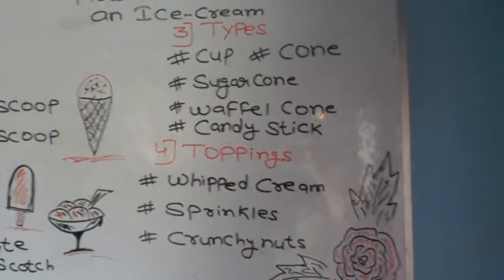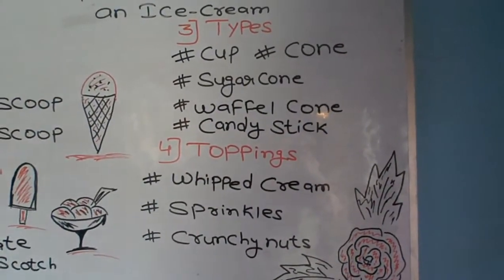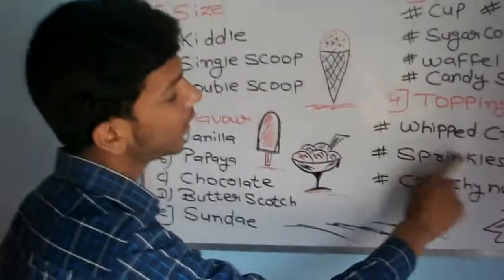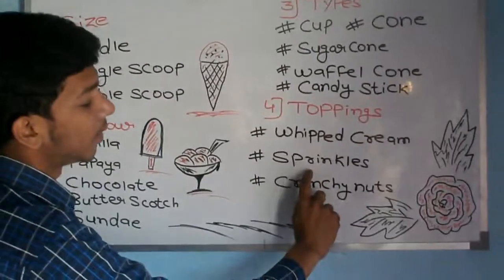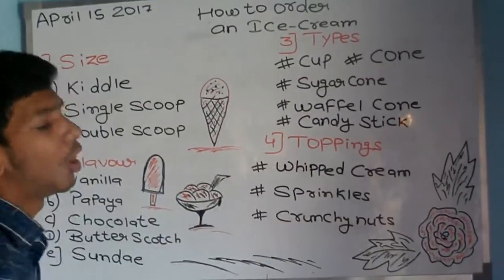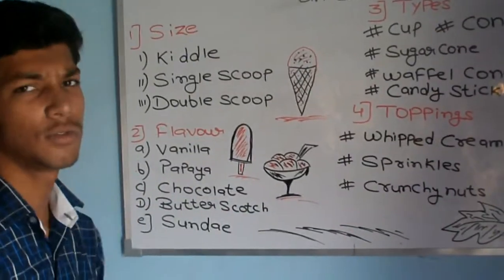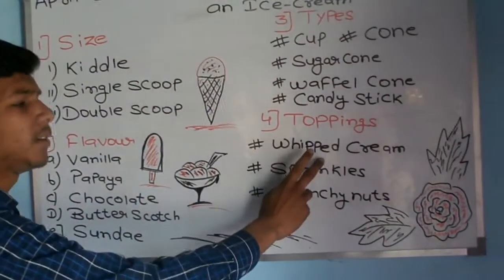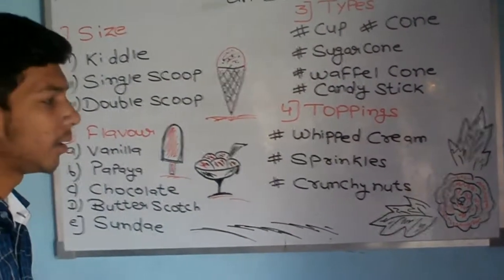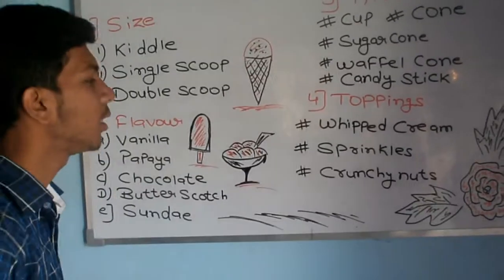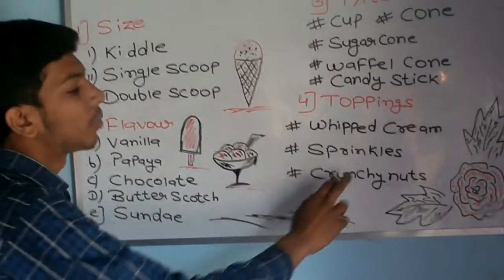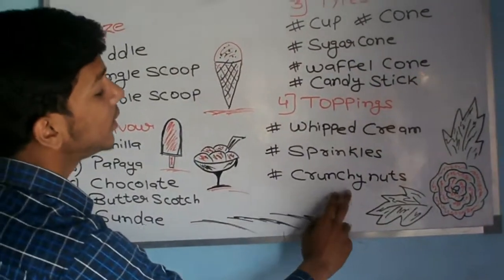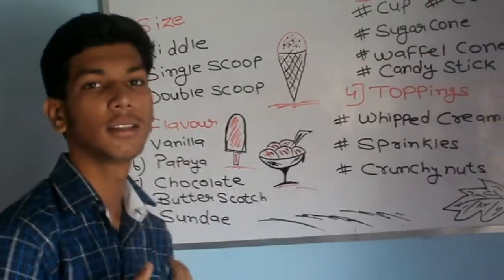Now let's talk about toppings. We have three main types of toppings: whipped cream, sprinkles, and crunchy nuts. There are other types of toppings as well, such as fresh fruits. Whipped cream is very soft and light.